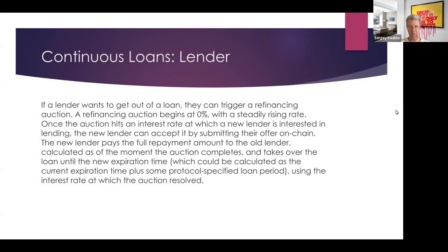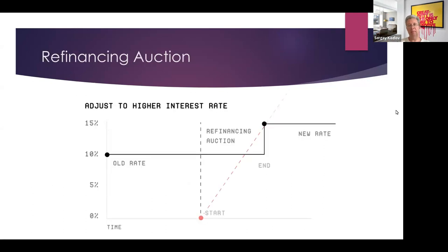If no lender steps in to refinance, the interest rate rises to the maximum — as I understand it, 1,000%. Once the Dutch auction expires with no offers, we as the lender effectively liquidate the loan and take the NFT collateral for ourselves.